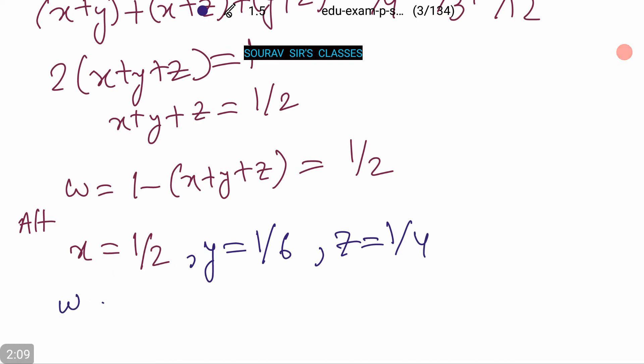Again leading to W equals 1 minus, which is 1/12 plus 1/6 plus 1/4, which equals 1/2.